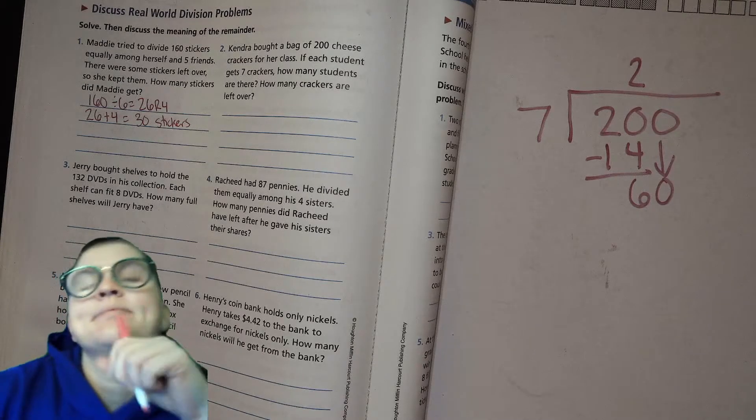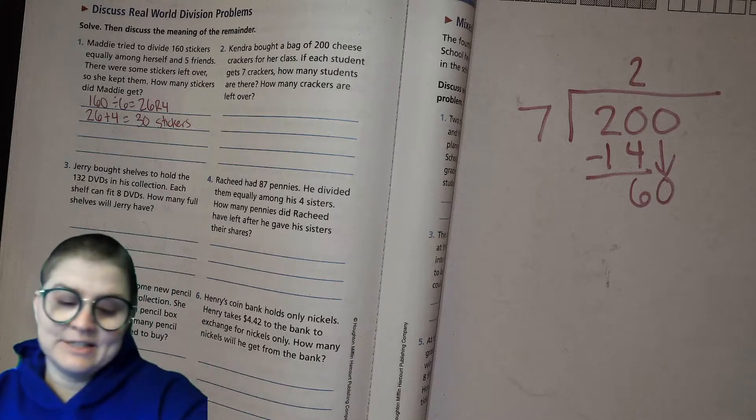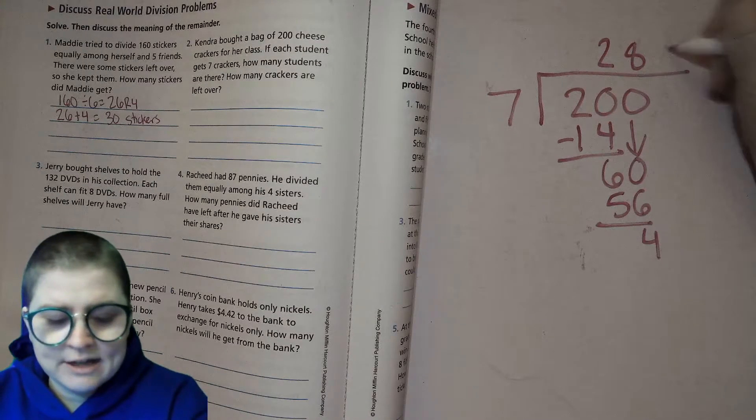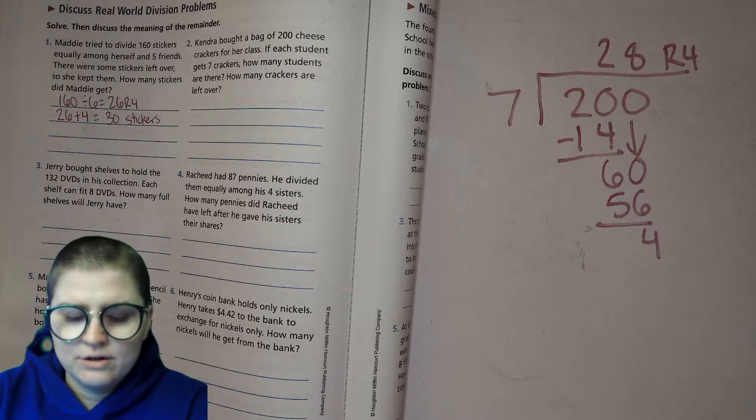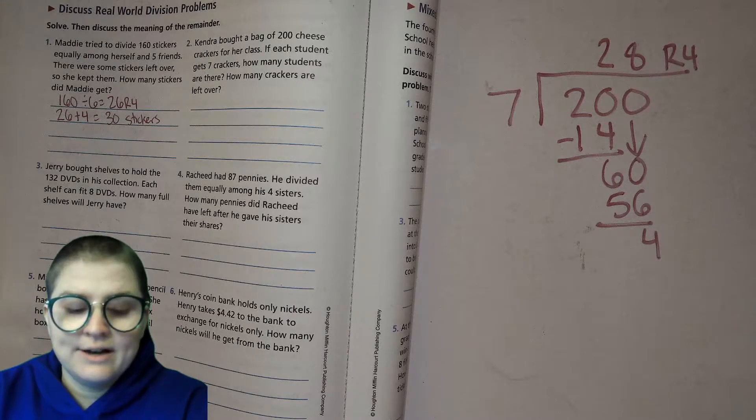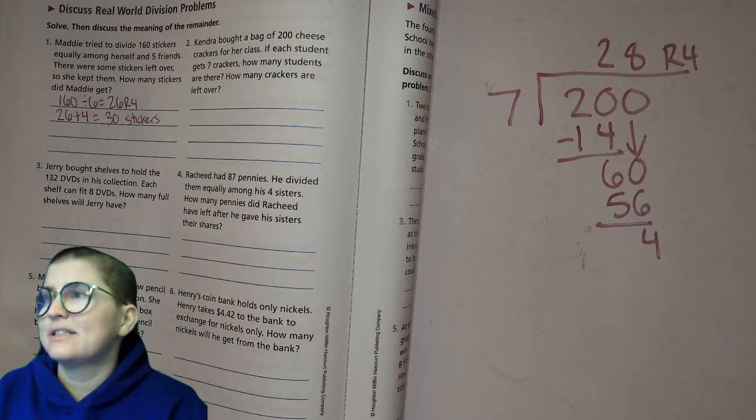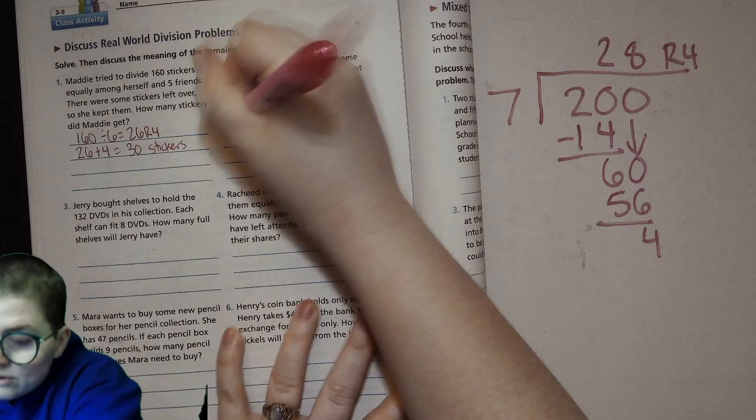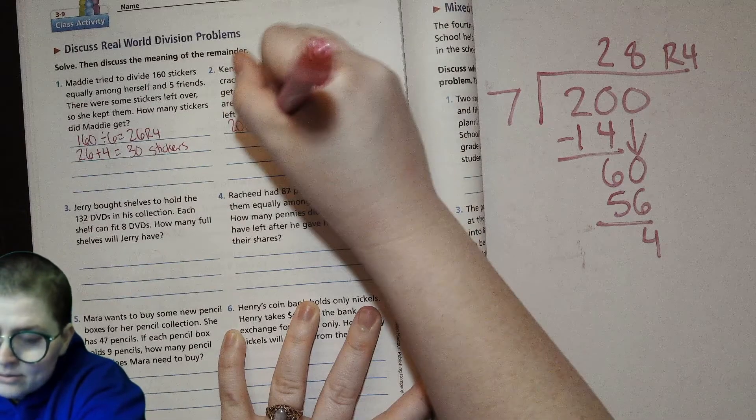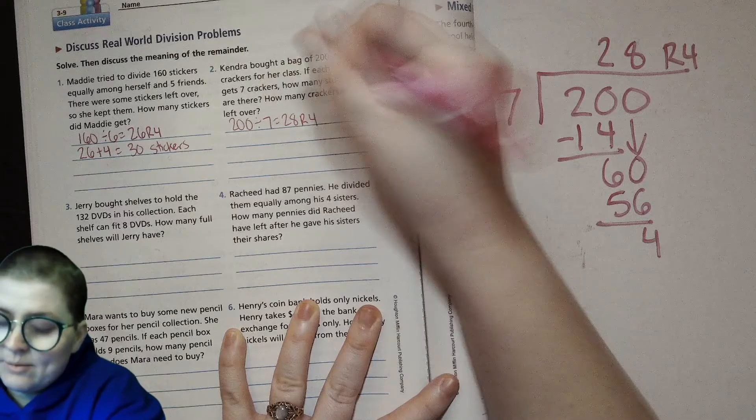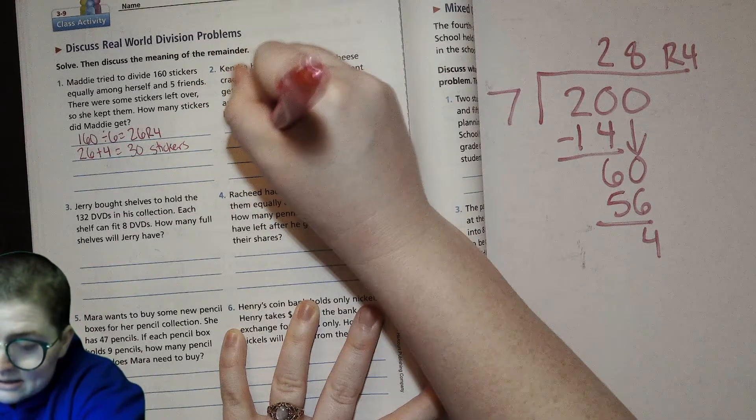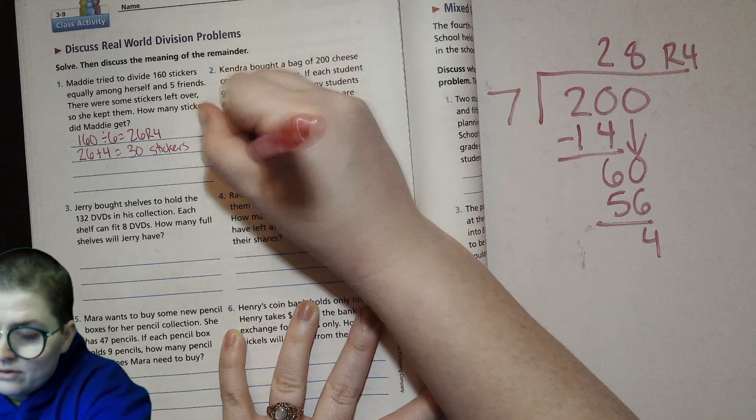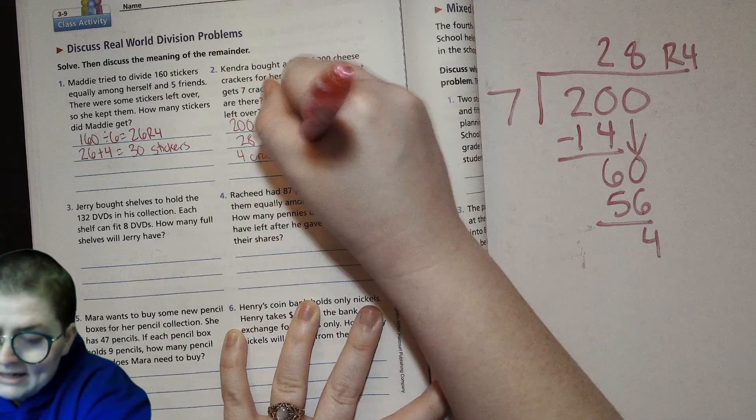7 times 7 is 49, 7 times 8 is 56. And then 4. So that means we're gonna have 28 remainder 4. So there are 28 students, and then the remainder is the 4 crackers that didn't get given to students. So we have 200 divided by 7 equals 28 remainder 4, and then we have 28 students and 4 crackers left over remaining. That's the remainder.